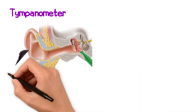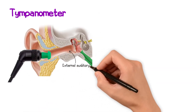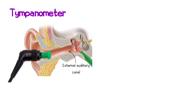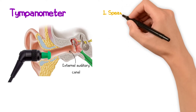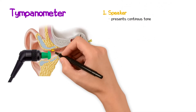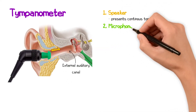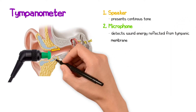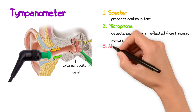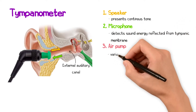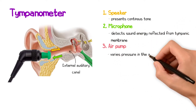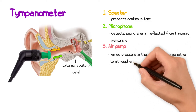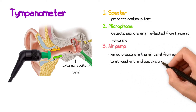A tympanometer consists of a probe that is inserted into the external auditory canal. This probe contains a speaker that presents a continuous tone, a microphone that detects sound energy reflected from the tympanic membrane, and an air pump that varies the pressure in the ear canal from negative through to atmospheric and positive pressure.